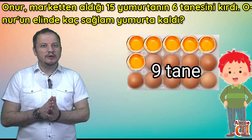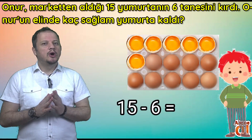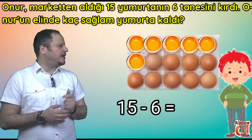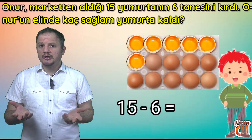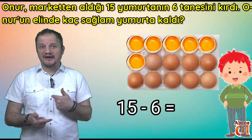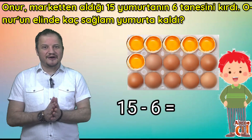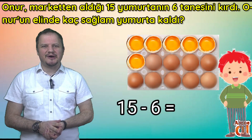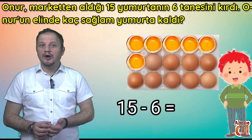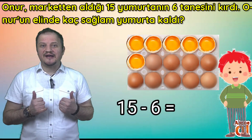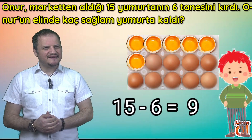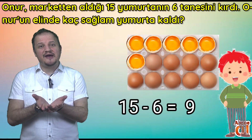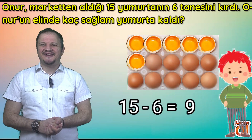Peki işlem olarak nasıl çözmeliyiz bunu? En başta kaç yumurtamız vardı? 15. 15'ten biz neyi çıkaracağız? 6'yı çıkaracağız. 15'ten 6'yı çıkaralım. Nasıl çıkarıyorduk? 6 sayı geri geri sayıyorduk değil mi? Çıkarmanın farklı farklı yöntemleri de var ama en sık kullanılan yöntemi budur. Geri geri sayalım o zaman: 14, 13, 12, 11, 10, 9. 6 defa geri saydığımız zaman 9 sayısına ulaşırız. Eve 9 sağlam yumurtayla döner çocuklar.